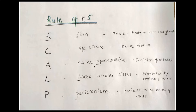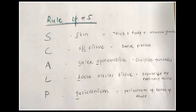The third layer is the galea aponeurotica, containing the occipitofrontalis muscle with two frontal bellies and two occipital bellies. The fourth layer is loose areolar tissue containing a dead space, traversed by emissary veins connecting the soft tissue of the scalp to the intracranial venous sinuses.